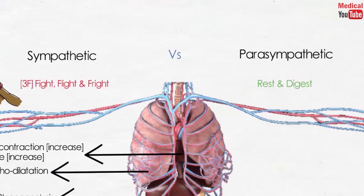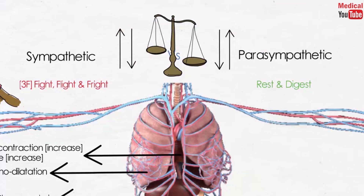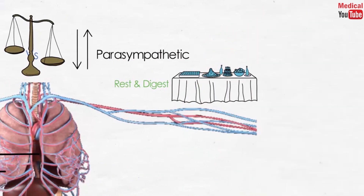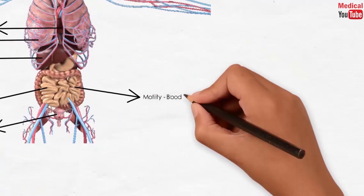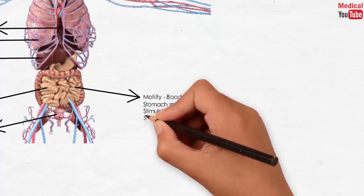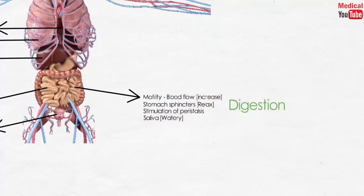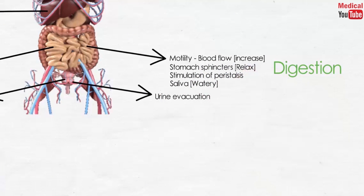Now let's discuss the actions of the parasympathetic division. There is a balance between the sympathetic and parasympathetic actions — when one goes up the other goes down. Parasympathetic predominates in resting conditions, called rest and digest. Suppose you are sitting at the table eating: the GIT motility and blood flow increase, sphincters of the stomach relax allowing food to pass through, there is contraction of the GIT, and watery saliva is produced. Regarding urination, in the resting state your body helps you get rid of waste through urine evacuation — relaxation of the sphincter muscle and contraction of the detrusor muscle.